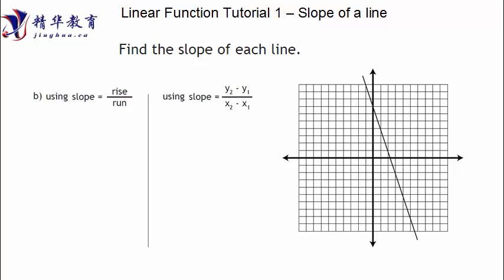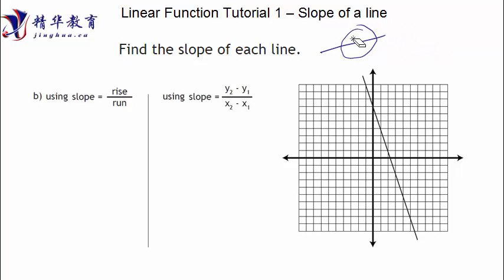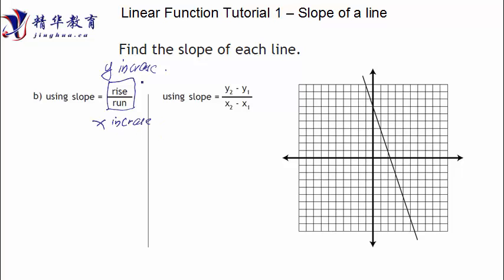What is the slope? The slope just shows how steep the line is. We can have a line like this, and then we can have a line like this. Obviously, this one's slope is higher than this one's slope because it's more steep — it's increasing faster. That means slope. So how do we actually find the slope? We use one measurement called rise over run. Rise means how much the y increases over the x increase.